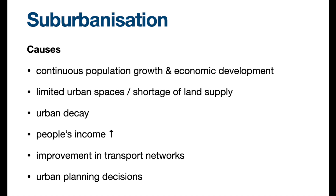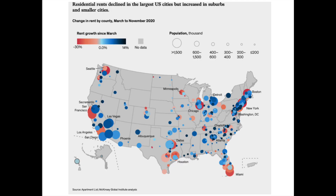Industrial estates are also common — in Hong Kong and the UK, there are towns built specifically around certain industries or factories. For example, in Italy there is a town built around the Ferrari factory, where most residents work for Ferrari. As for COVID's impact, it mostly applies to the US case — people migrated out of big cities during the pandemic.